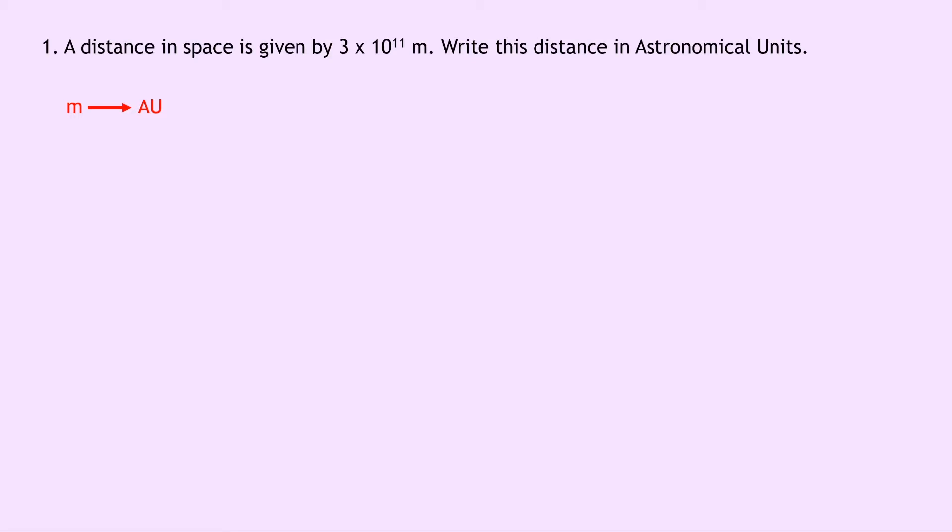So that means we expect a division here and it means we're going to take our number 3 times 10 to the 11 and divide it by 1.5 times 10 to the 11 metres, which is how many metres are in 1 AU. And if we do that and put that into your calculator then you should get an answer of 2 AU.